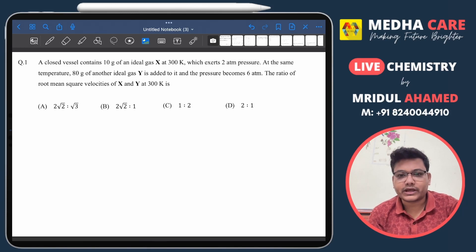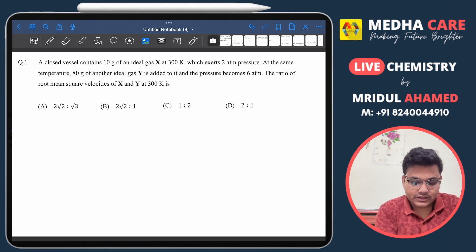Hello everyone, welcome to Medha Care. In this video, we'll solve this question from JEE Advanced 2024. In this question, we have that in a closed vessel, 10 grams of an ideal gas at 300K which exerted 2 atm pressure. So let us understand the question first.